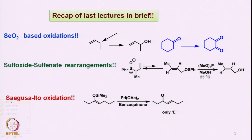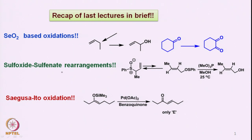Hello everyone. I hope you had the chance to go through the last classes where I discussed many aspects of oxidation reactions. Today we will briefly go through a few points from the last classes. For example, what we did was selenium dioxide based oxidations, and then we also did the sulfoxide sulfenid rearrangements. We also did conversion of ketones to diketones and oxidation at the allylic position to give an allyl hydroxy group. Then we also did the Cygursa-Eto oxidation where enol allyl ether was converted to the corresponding enone.